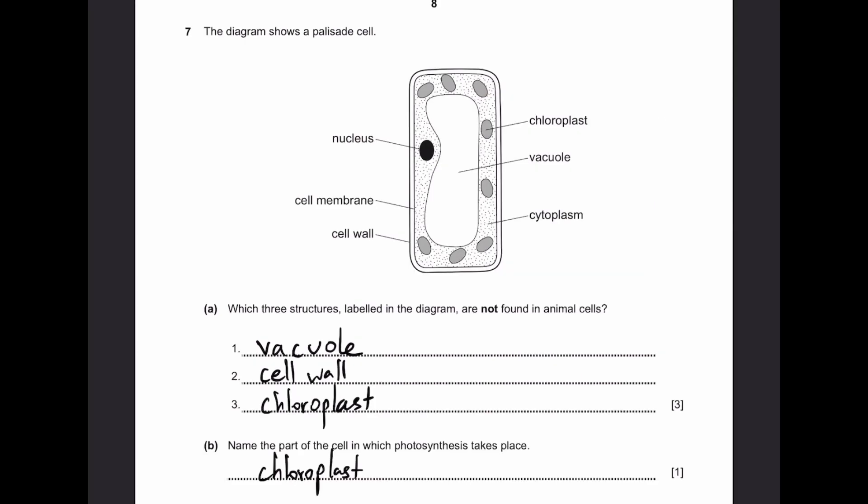Question 7. The diagram shows a palisade cell. Part A. Which three structures labeled in the diagram are not found in animal cells? In animal cells, we can find nucleus, cell membrane, and cytoplasm. So the three structures which are not found are vacuole, cell wall, and chloroplast.